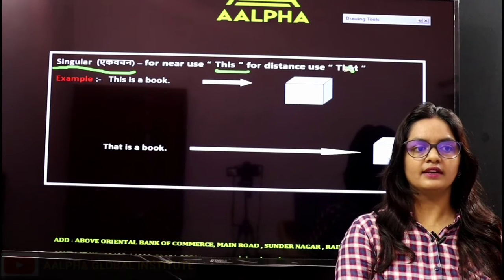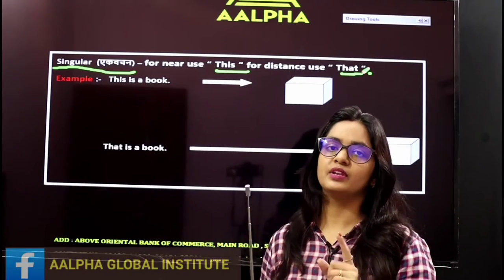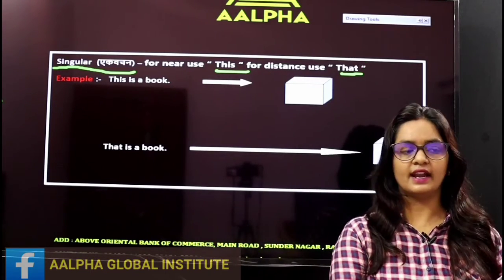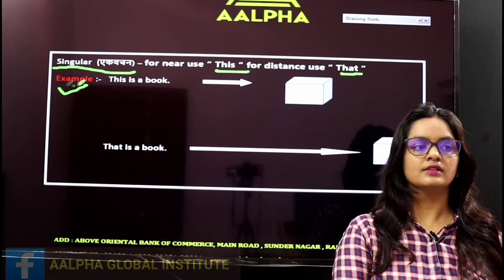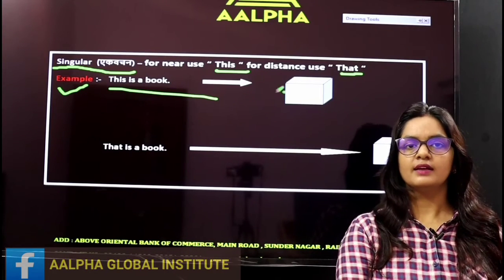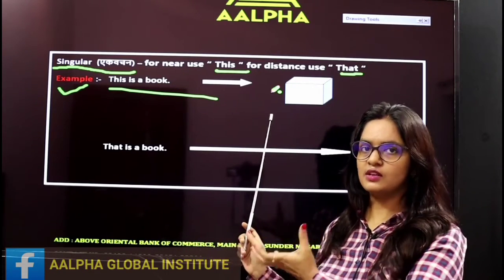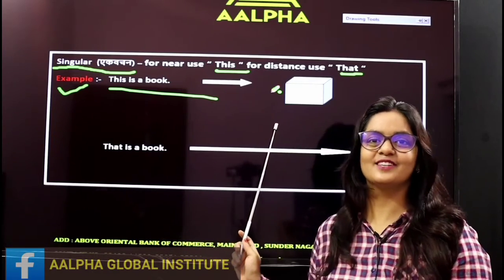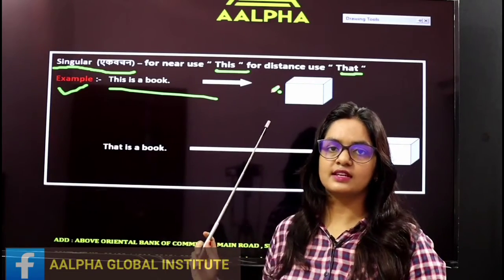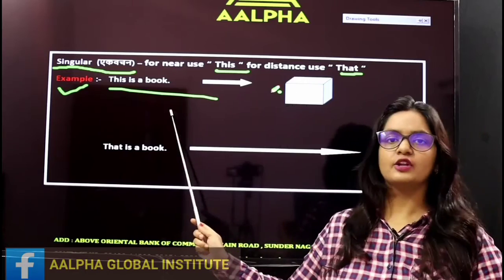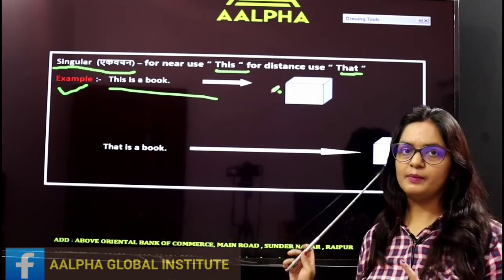For any single object, we use 'this' or 'that.' For example: 'this is a book' — if the book is nearby. Note: the picture shown may look like a box, but the example says 'book,' so assume it is a book. If the book is close to you, say 'this is a book.' If it is at a distance, say 'that is a book.'